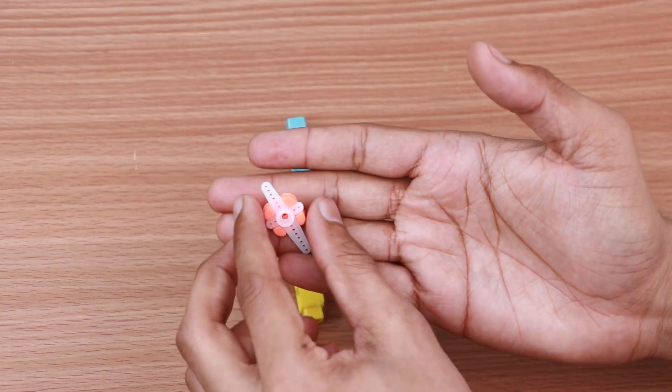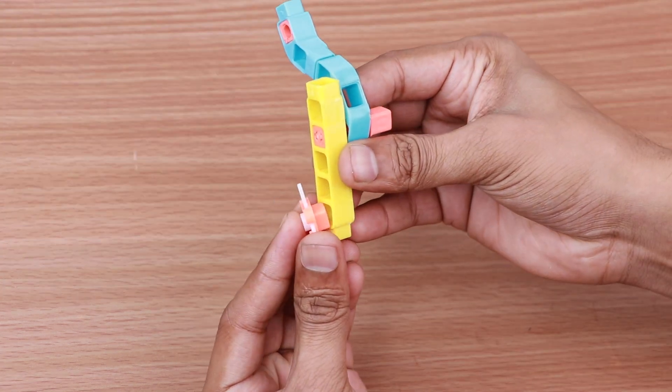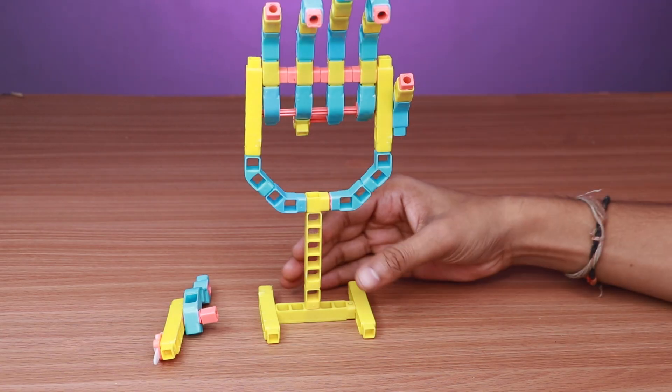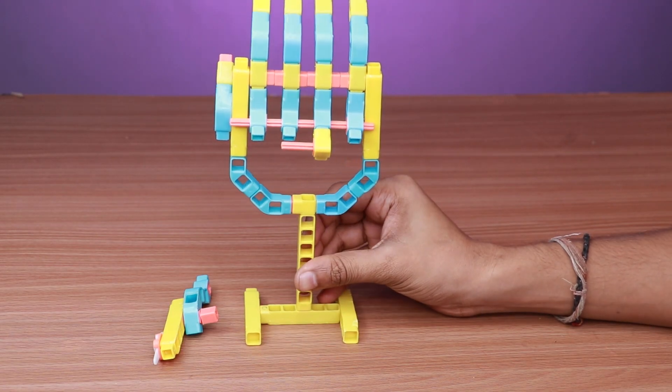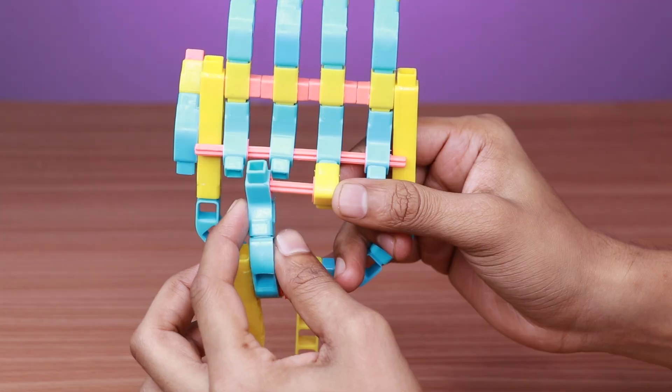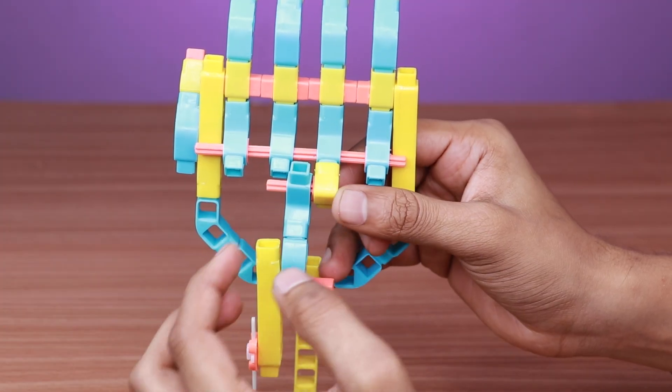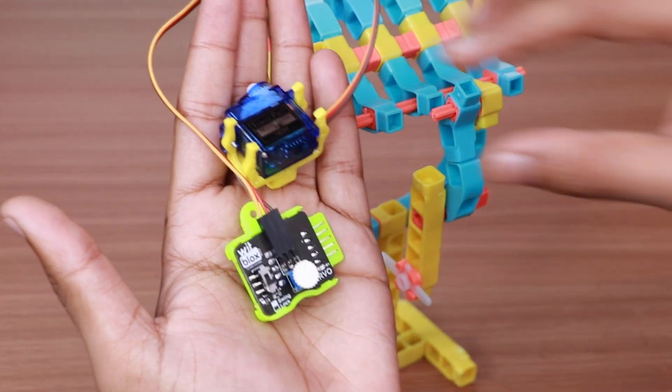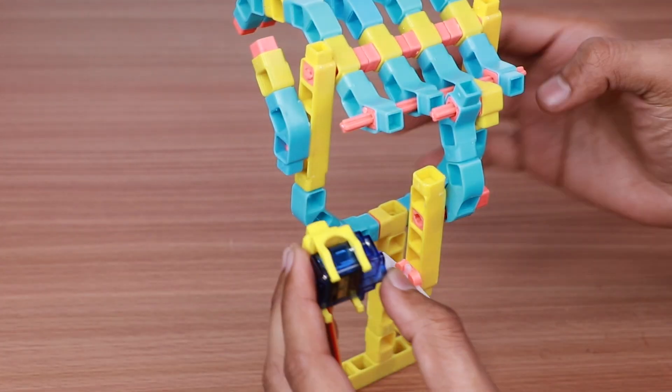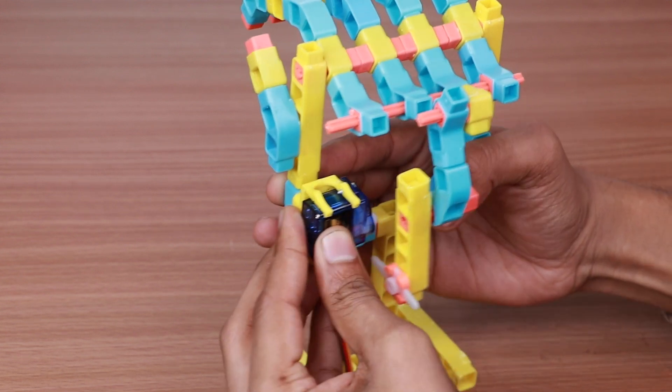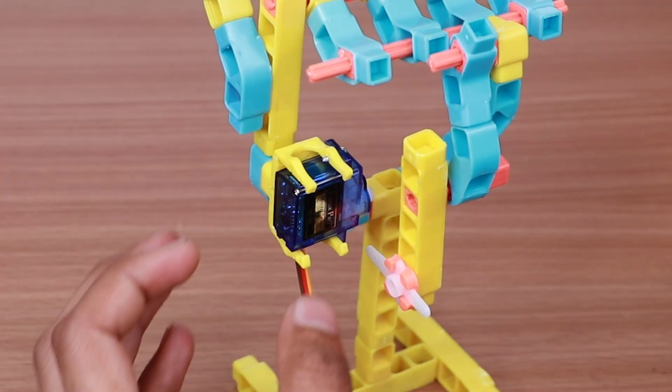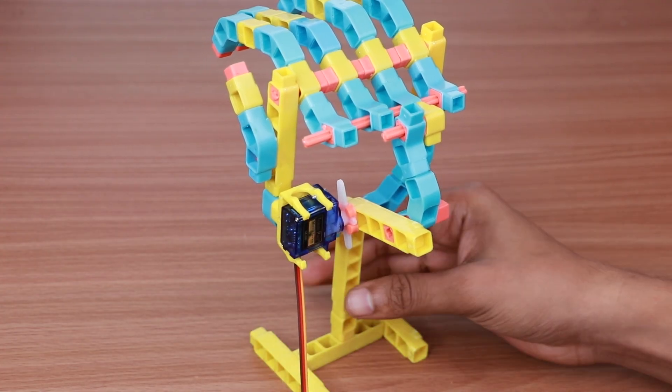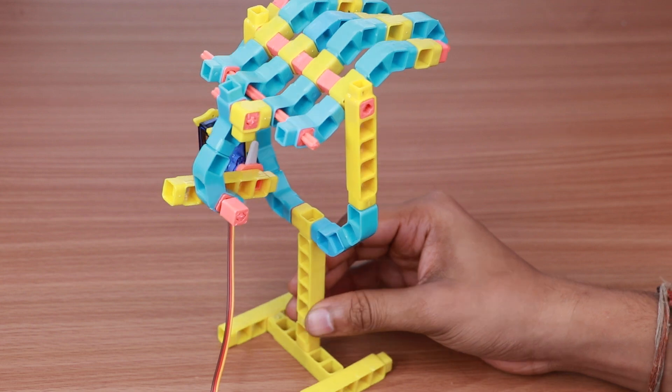Take the servo motor shaft connected to the servo shaft holder and connect it to this part. This part is for driving the hand mechanism. Attach it to the main structure as shown. Attach the servo motor to this part. The structure is now ready.